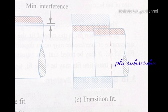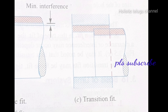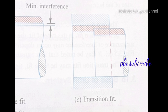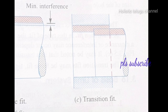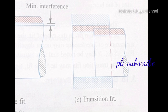Transition fit: the size limits for the mating parts are so selected that either a clearance or interference may occur depending upon the actual size of the mating parts. It may be noted that in a transition fit, the tolerance zone of the hole and shaft overlap.